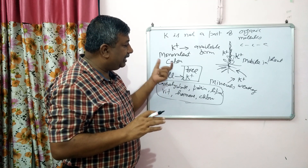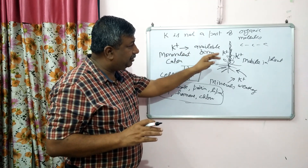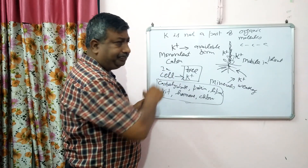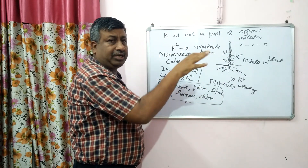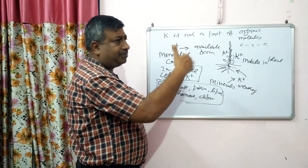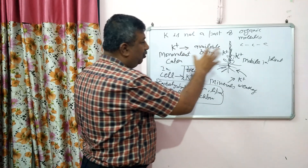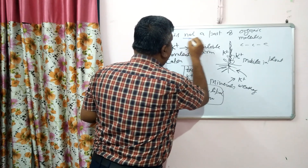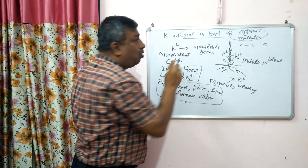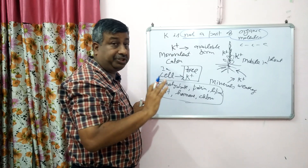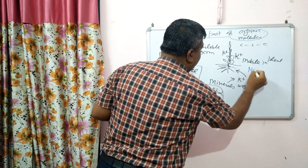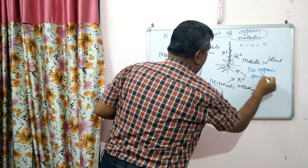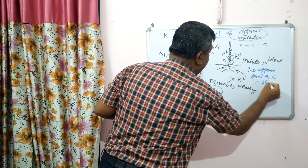Potassium remains in the plant as such — as K+. It is free; it moves from cell to cell, vacuole to cytoplasm, and from the lower part to the upper plant. So it is freely moved. Please remember and note that it is not a part of organic molecules. There is no organic form of potassium in plants — this is very important.